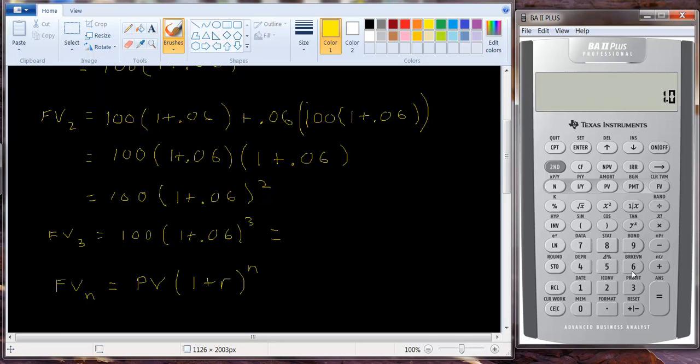One point zero six. And if we hit the y to the x key that allows us to raise it to a power. We raise it to the third power. Times one hundred. And so the future value of a hundred dollars deposited today in three years will be one hundred and nineteen dollars and ten cents.